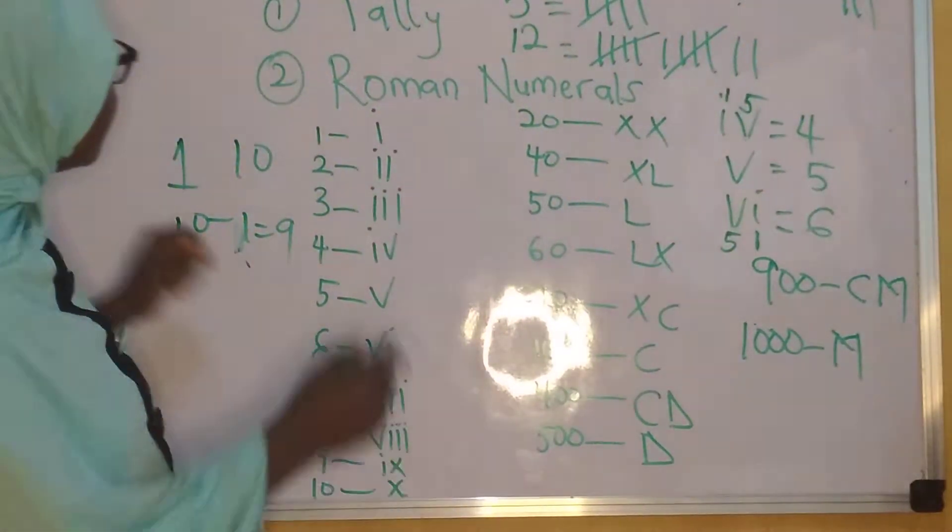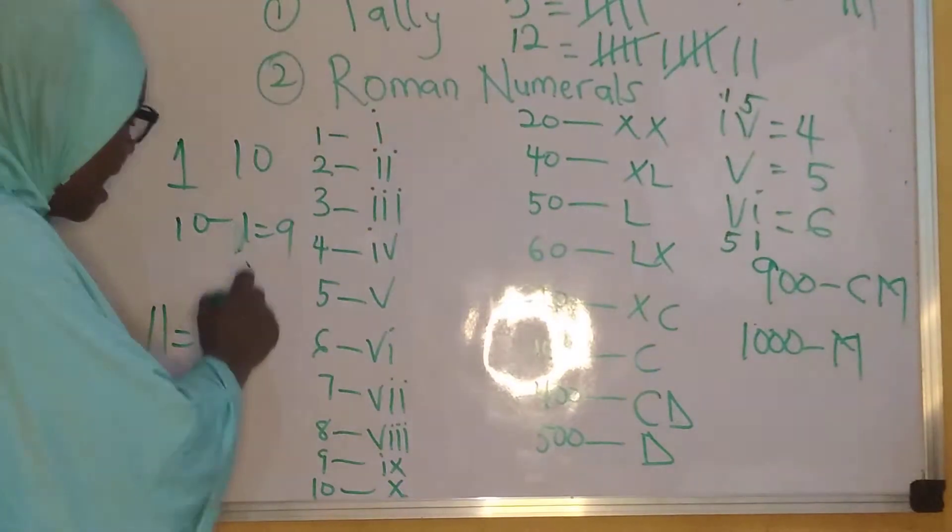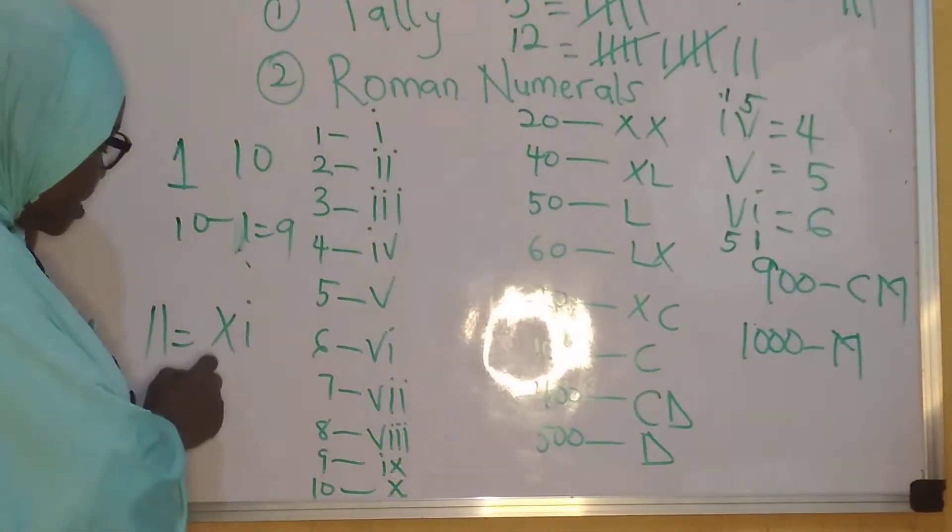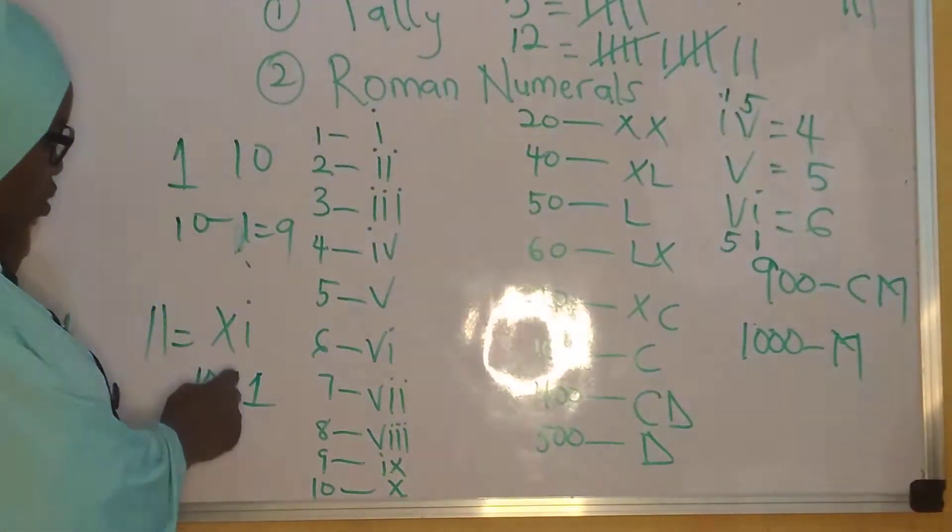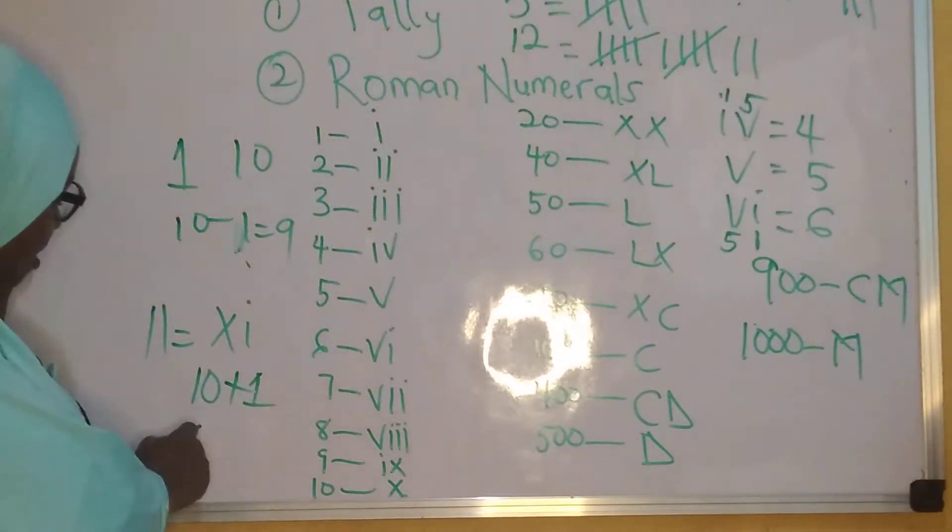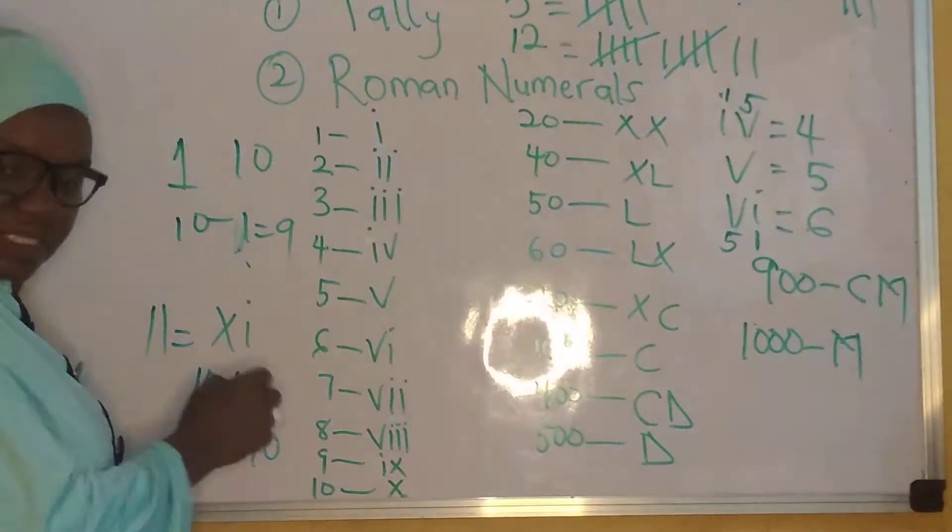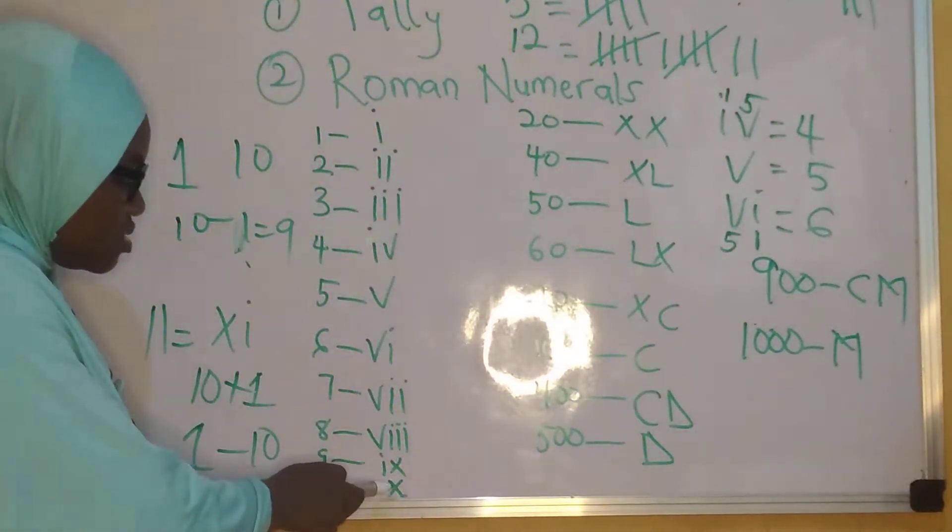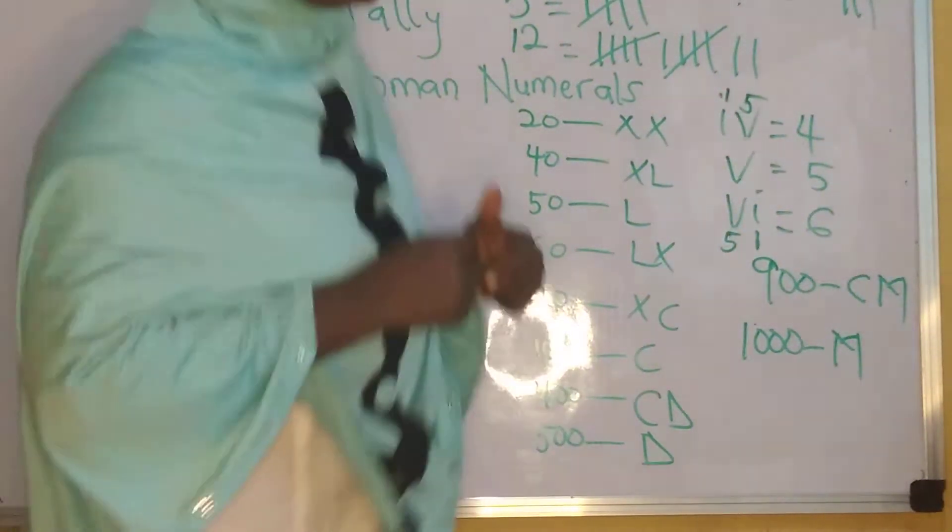Meaning that our 11 will be XI. Why is it XI? Because I have 10, a big number written first and then a small number. So in this case, you have to add. But if you have a smaller number first and a bigger number later, that means you subtract. So our 10 is just X. My 9 is IX.